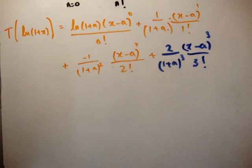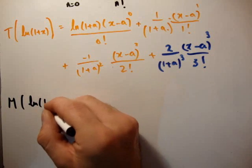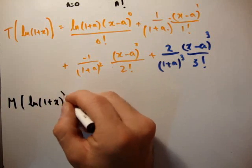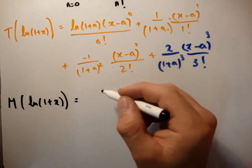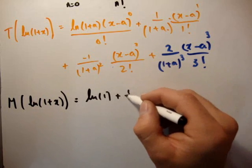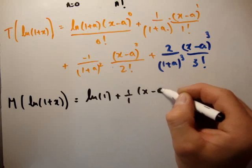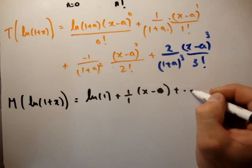you're going to get the Maclaurin series expansion of our function natural logarithm of 1 plus x. So the Maclaurin series of natural logarithm of 1 plus x is equal to natural logarithm of 1 plus 1 over 1 times (x minus 0), plus, and so on.